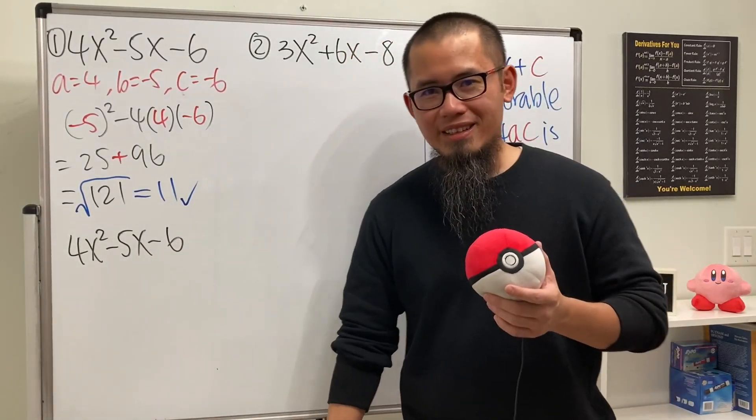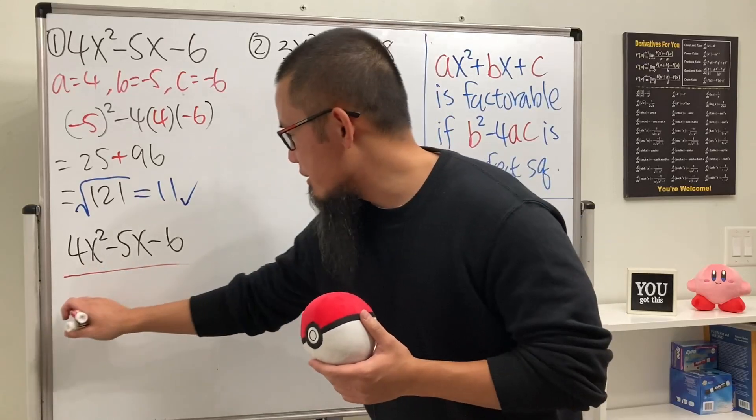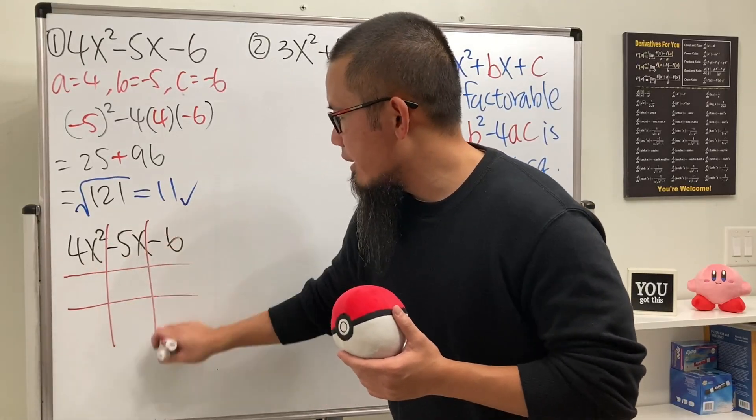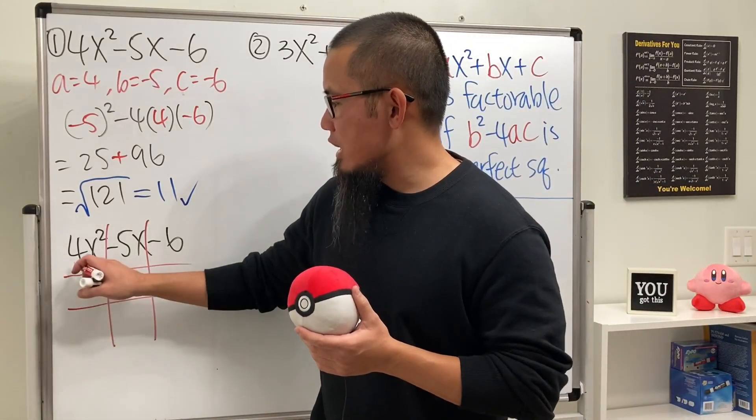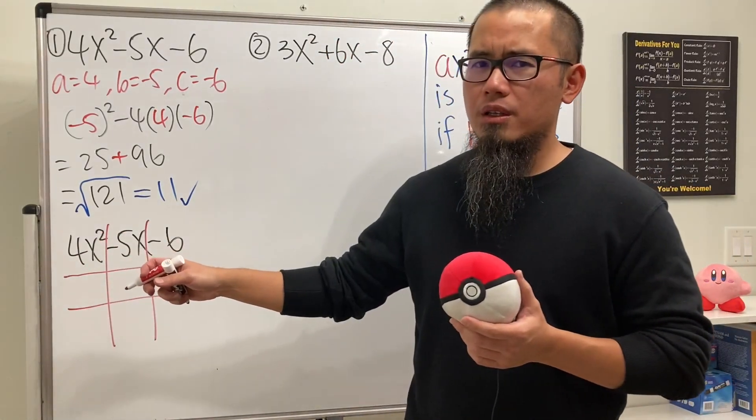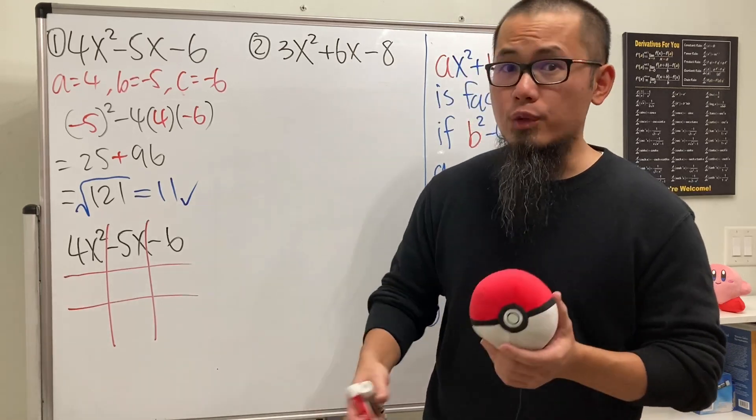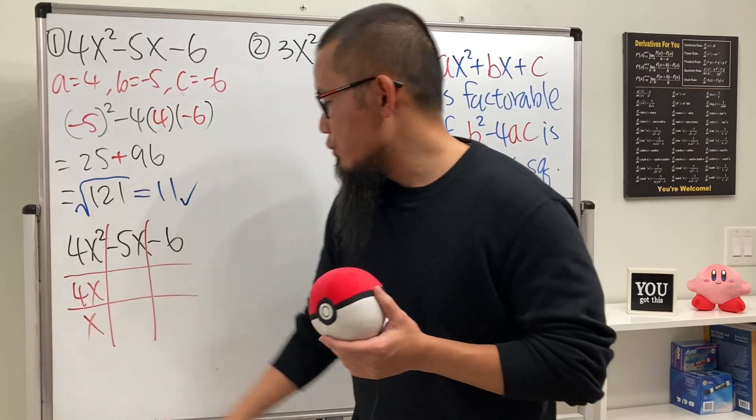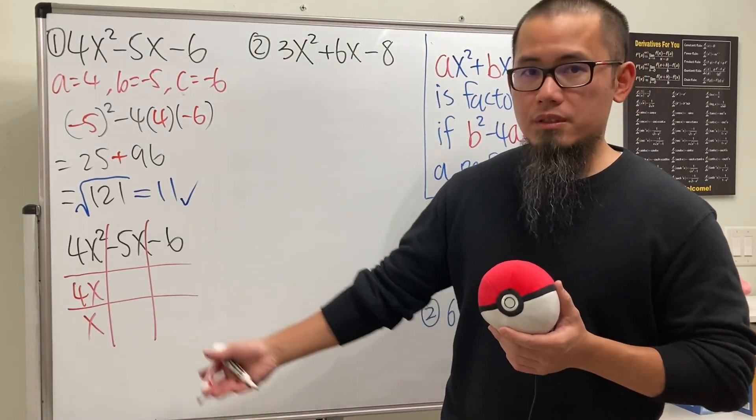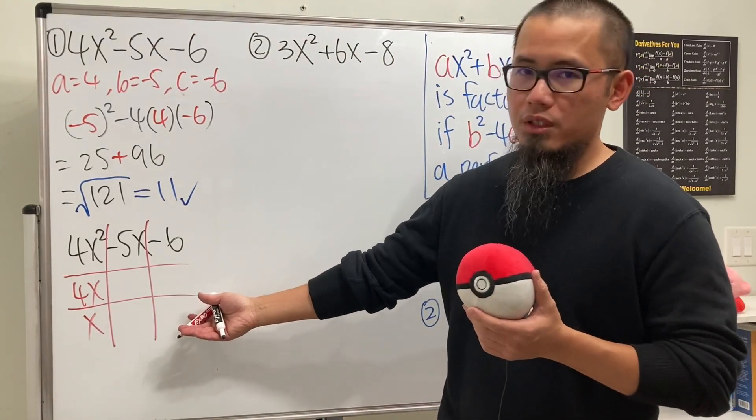And I like to use the tic-tac-toe method. Just go ahead and draw the tic-tac-toe boxes like so, and I'm just going to put down the correct factoring for you guys. We ask ourselves, what times what gives us 4x²? Well, you have 2x times 2x, or maybe 4x times x. We are going to use 4x times x. How do we know? Because as I told you, we just know. I'm going to give you guys the answer for this one.